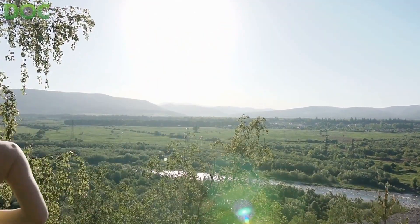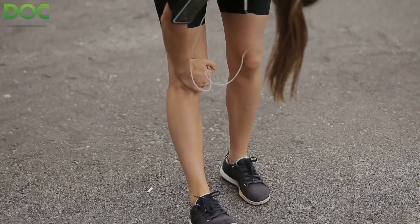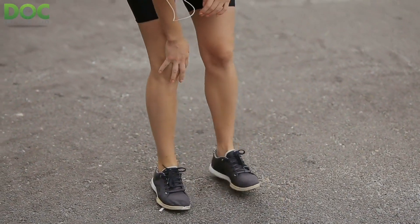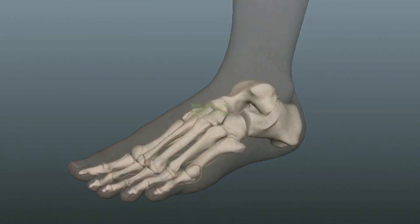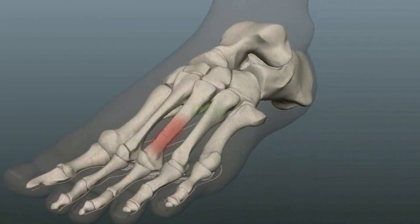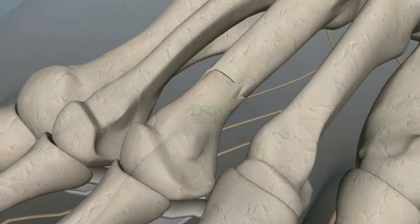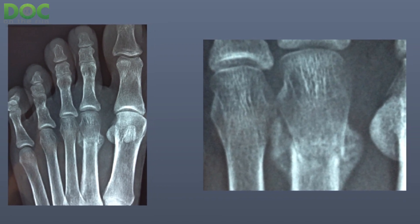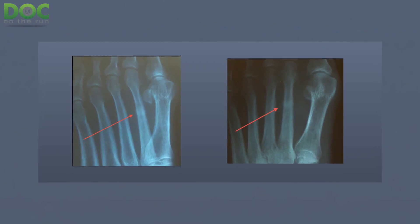A grade three stress fracture is where you have pain in your foot, pain when you touch the bone, and an actual crack that's visible on the x-ray — but the bone hasn't moved or shifted. It's what we call a non-displaced fracture line, meaning you can see a crack but the bone isn't tilted or out of place. That's a real fracture — a thing you can actually see on an x-ray.